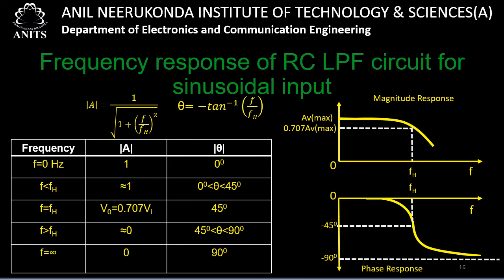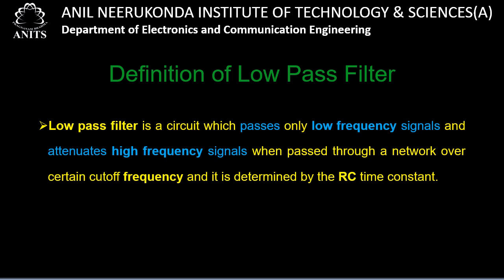The low pass filter circuit is defined as a circuit which passes only low frequency signals and attenuates high frequency signals above a certain cutoff frequency, determined by the RC time constant: fH = 1/(2πRC). Frequencies below fH are passed; frequencies above fH are rejected.